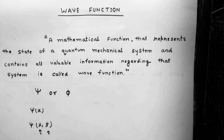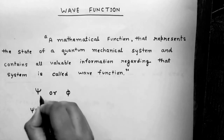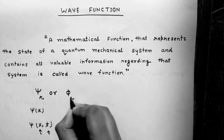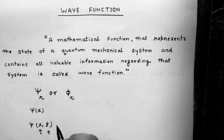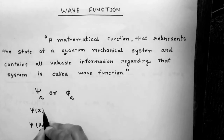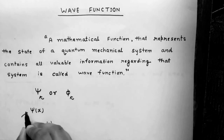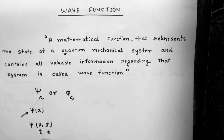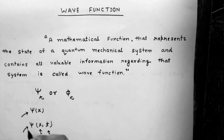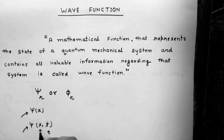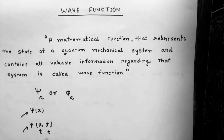Generally we represent a wave function by psi or phi. In position space, a wave function can be represented as psi(x), or more elaborately as psi(x,t), that is the wave function of the system at position x and at time t.